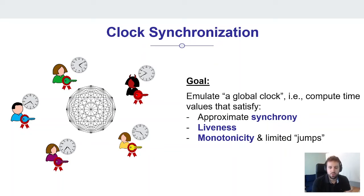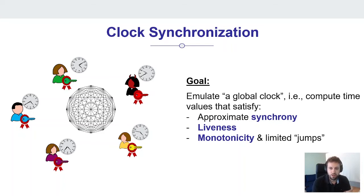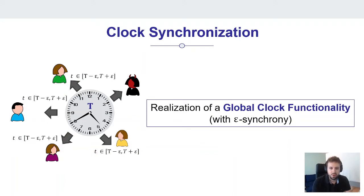The time values they compute should satisfy liveness — meaning the time values are increasing, just like real time — and we want monotonicity. We demand an error of time be implemented, and maybe due to imperfection of the protocol there might be some jumps in this sequence of time values, but those jumps are required to be limited and small. On a more abstract level, these parties try to jointly realize a global clock functionality: a functionality that internally keeps track of real time, and whenever a party asks it, gets a value within an epsilon interval around real time, where epsilon can be influenced by the adversary. The goal of a clock synchronization protocol is to realize this functionality.